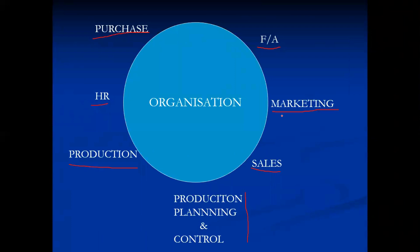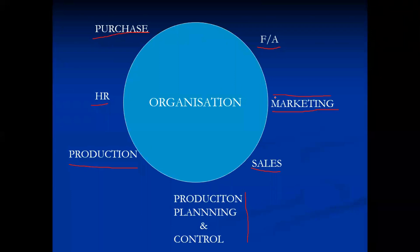Both the finance department and the marketing department are trying to maximize profits, but the way they go about it is different. The finance department tries to maximize profits by reducing expenditure, while the marketing department tries to maximize profits by incurring additional expenditure. This leads to conflict between finance and marketing — both departments are pulling the organization in opposite directions.